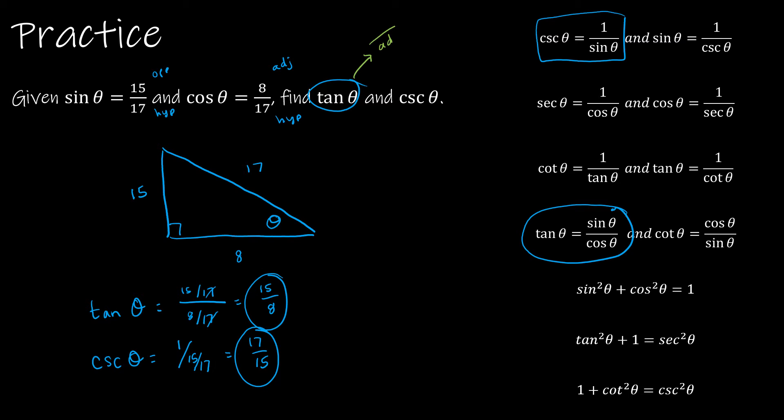opposite over adjacent. And so if I look at opposite over adjacent, I get 15 over 8. And then the same thing for cosecant. Instead of sine, which is opposite over hypotenuse, it would be hypotenuse over opposite, which would be 17 over 15, which is exactly what I got.